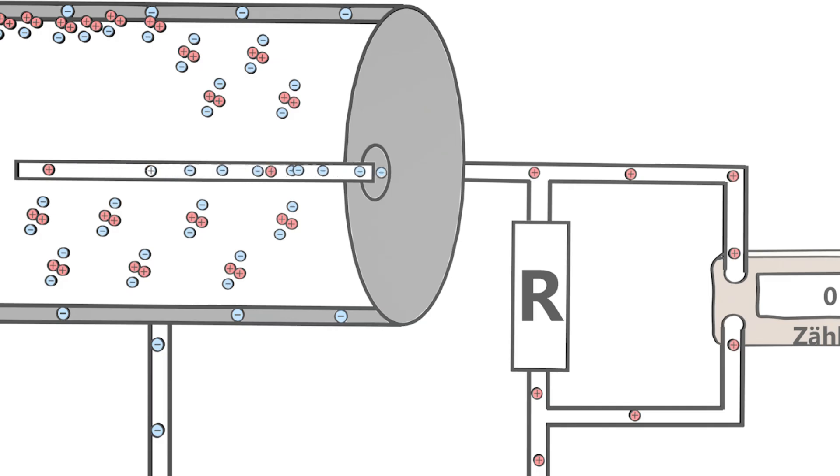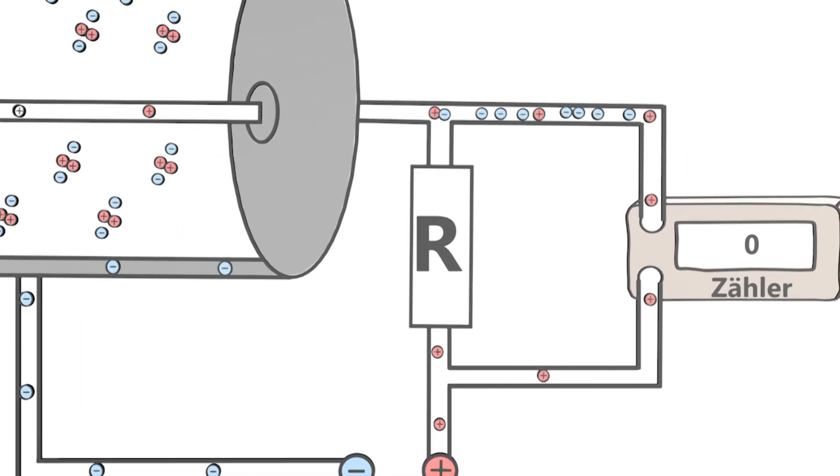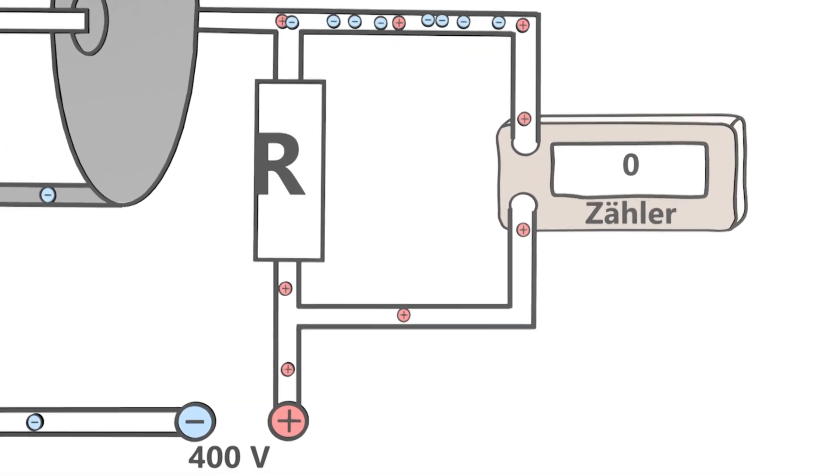You can get to the positive pole in two possible ways. Once through the very large resistor R and once through the counter. Since the resistance is very high, most of the electrons flow through the counter. The counter registers the current pulse and now shows the value 1. The value increases by 1 for each current pulse.